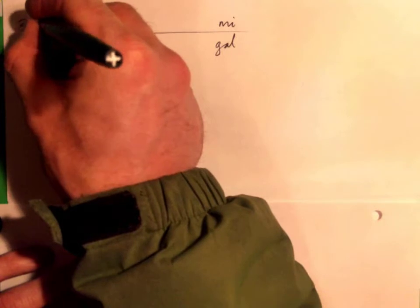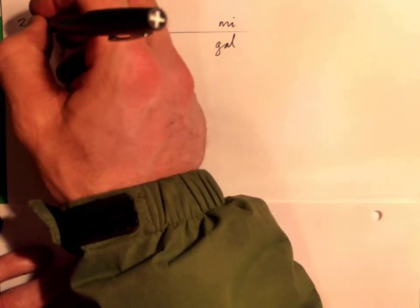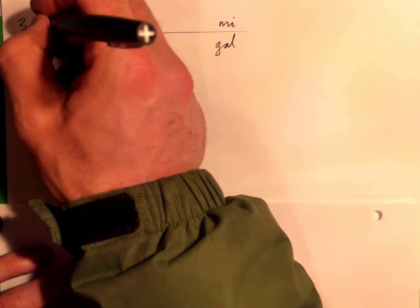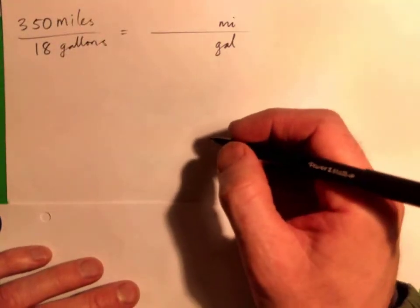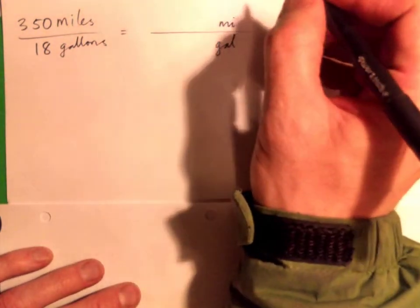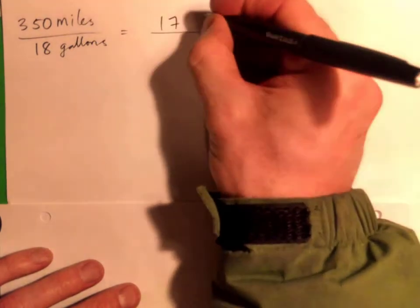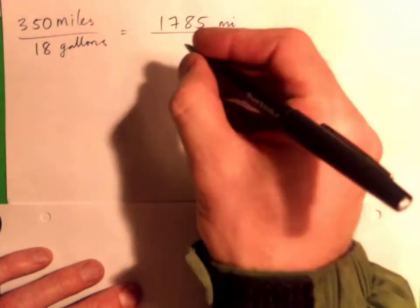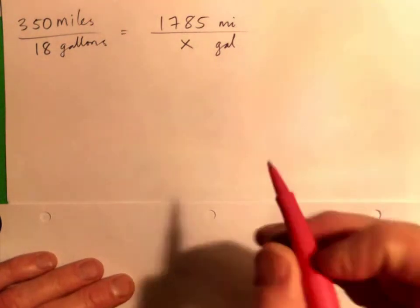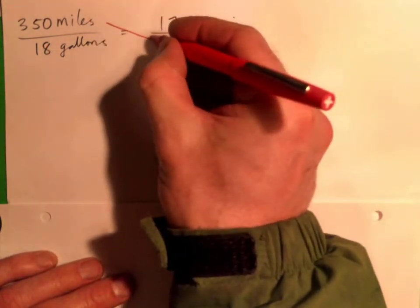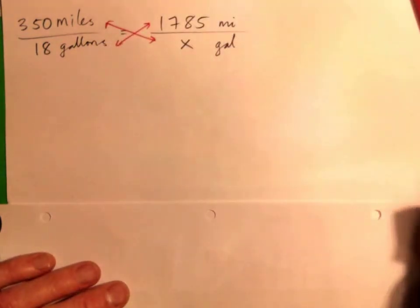And that's going to be the journey is 1785 miles on how many gallons we don't know, right? So we can cross multiply and get 350 times X equals 18 times 1785.